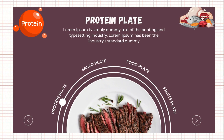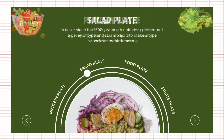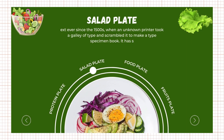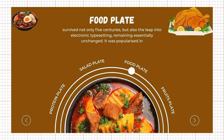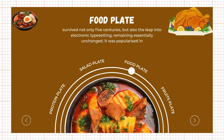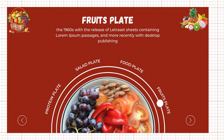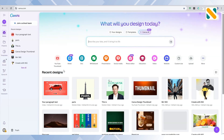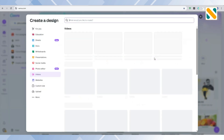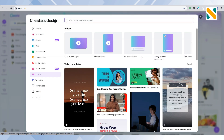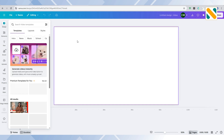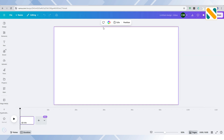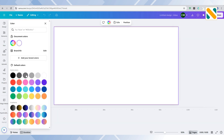Today I am going to create a circle morph animation in Canva. Go to canva.com and click on the video, then select the landscape video. First, change the background color to ash.